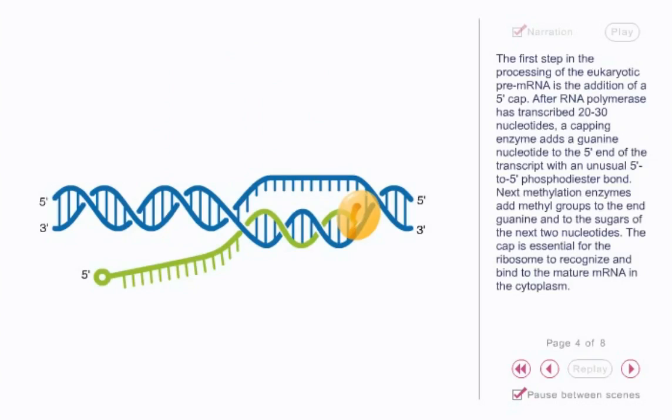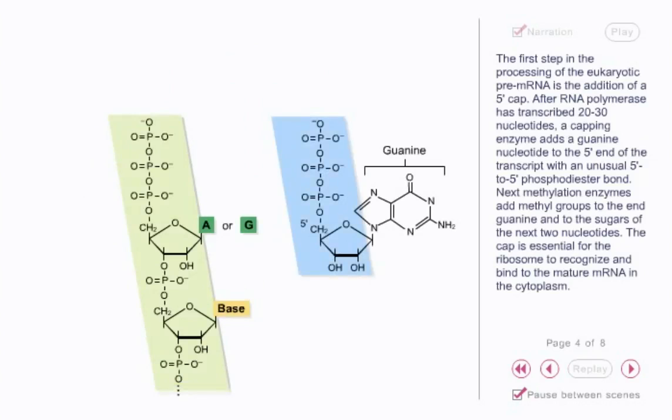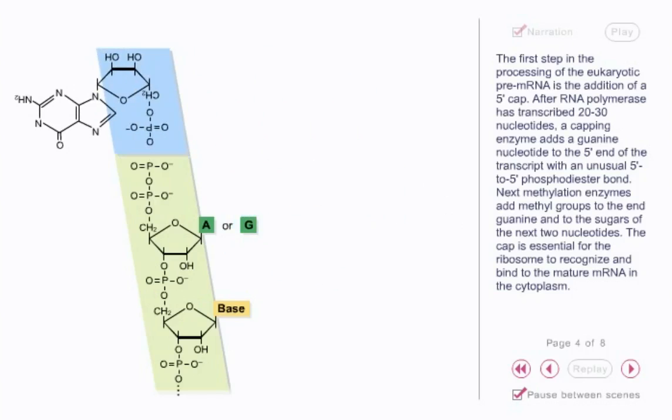The first step in the processing of the eukaryotic pre-mRNA is the addition of a five-prime cap. After RNA polymerase has transcribed 20 to 30 nucleotides, a capping enzyme adds a guanine nucleotide to the five-prime end of the transcript with an unusual five-prime to five-prime phosphodiester bond. Next, methylation enzymes add methyl groups to the end guanine and to the sugars of the next two nucleotides. The cap is essential for the ribosome to recognize and bind to the mature mRNA in the cytoplasm.